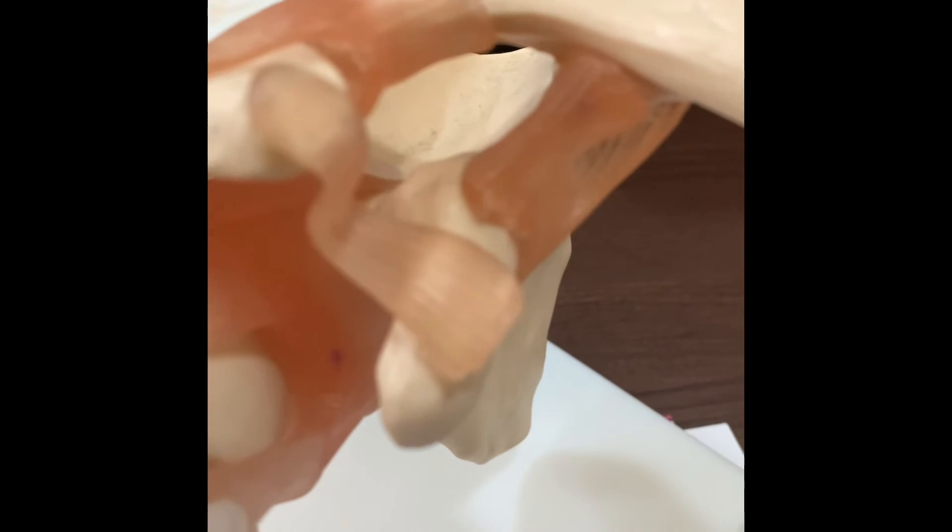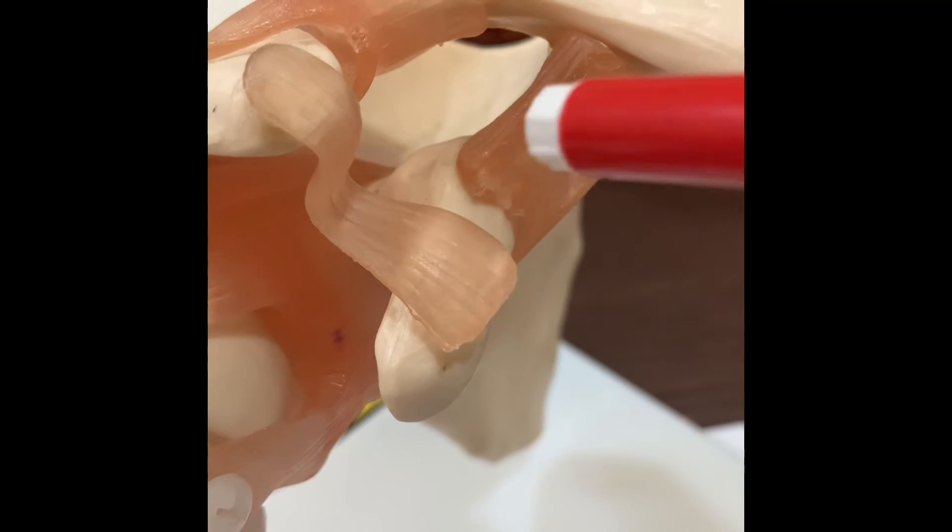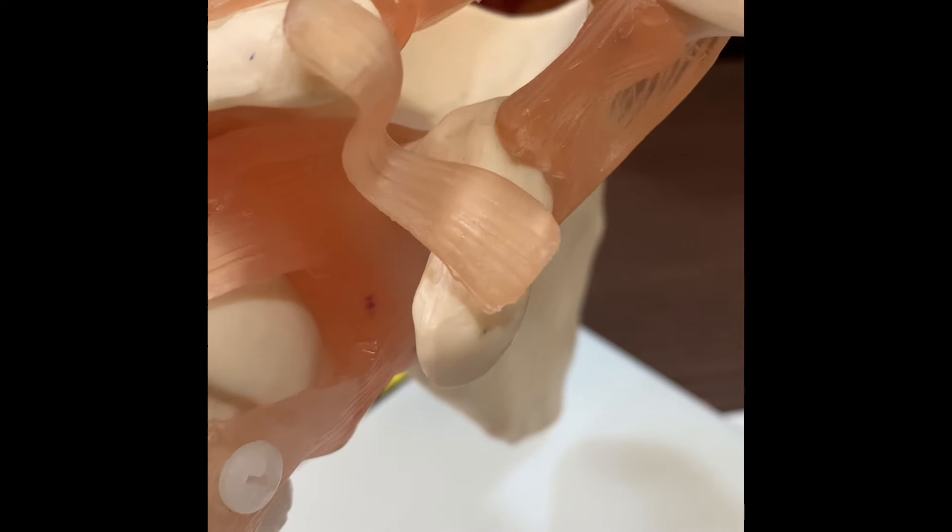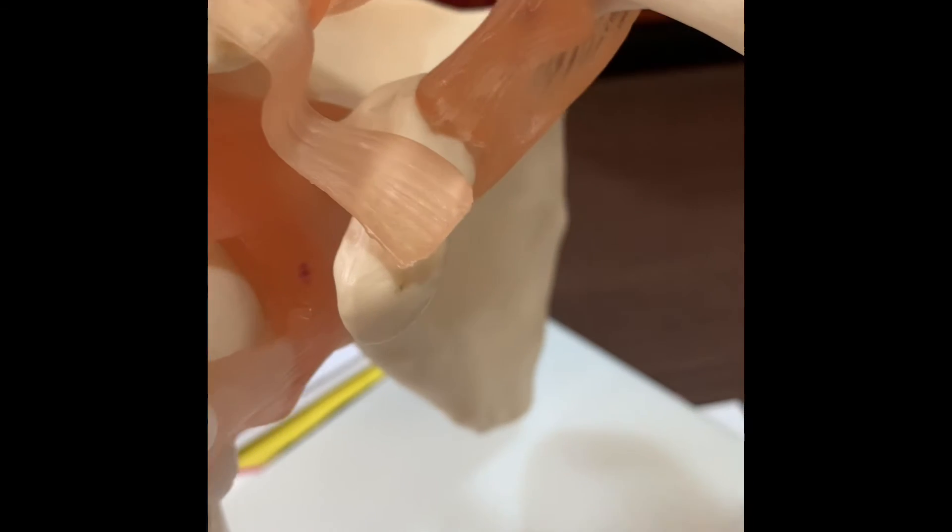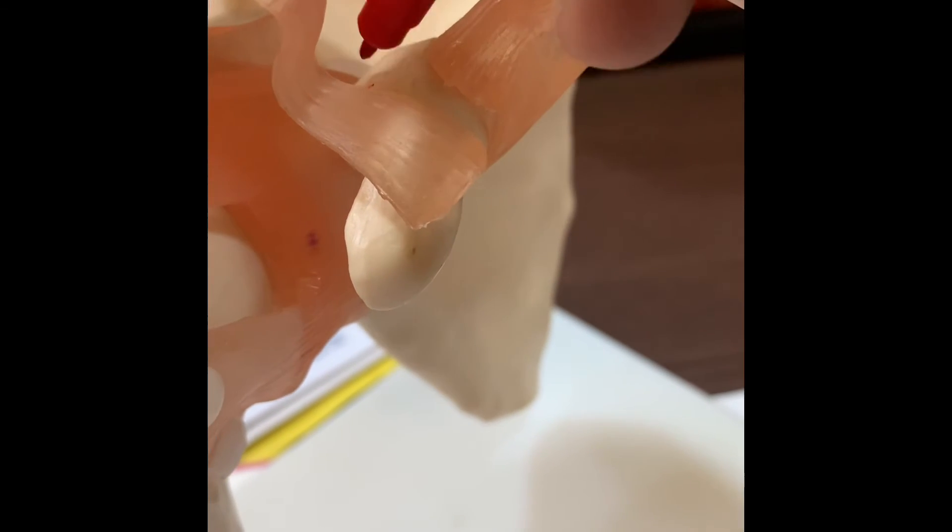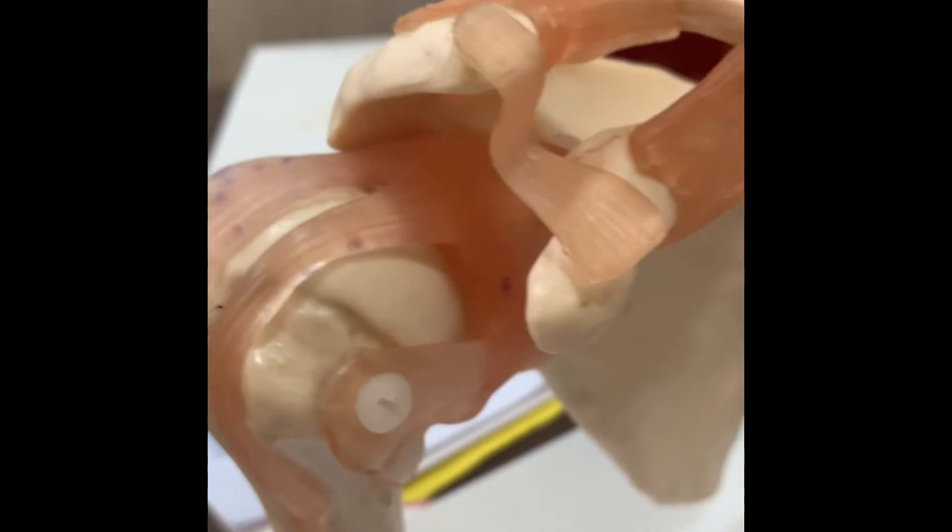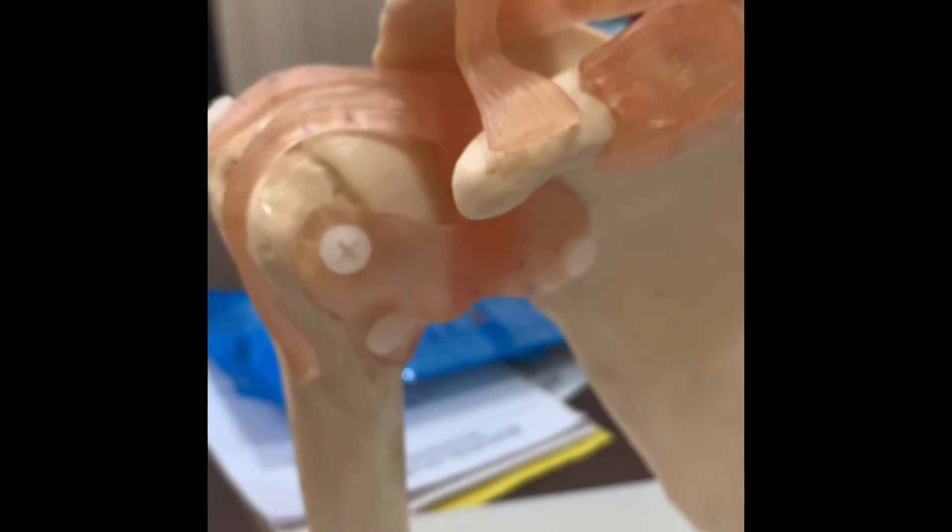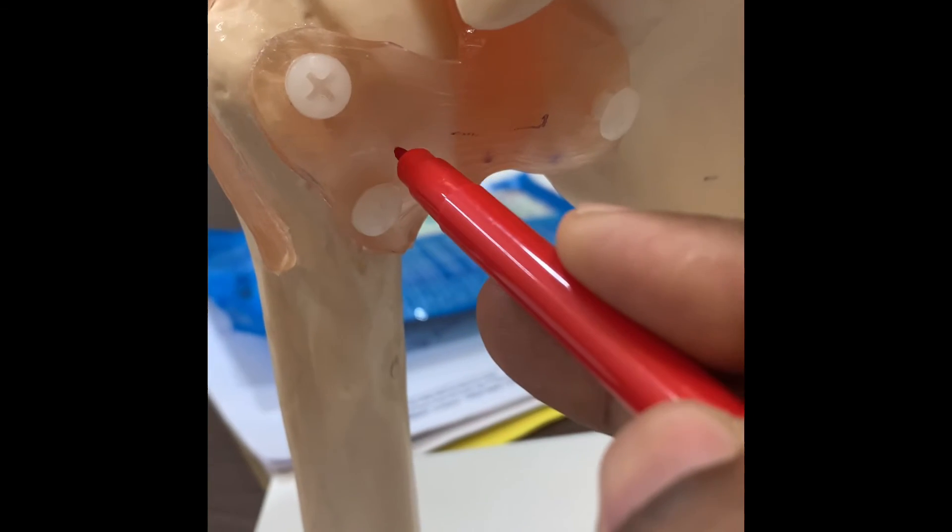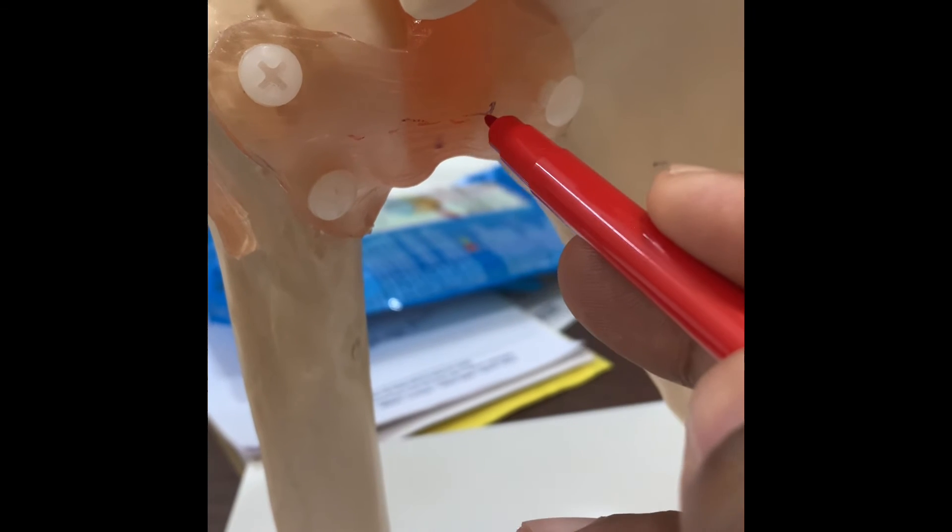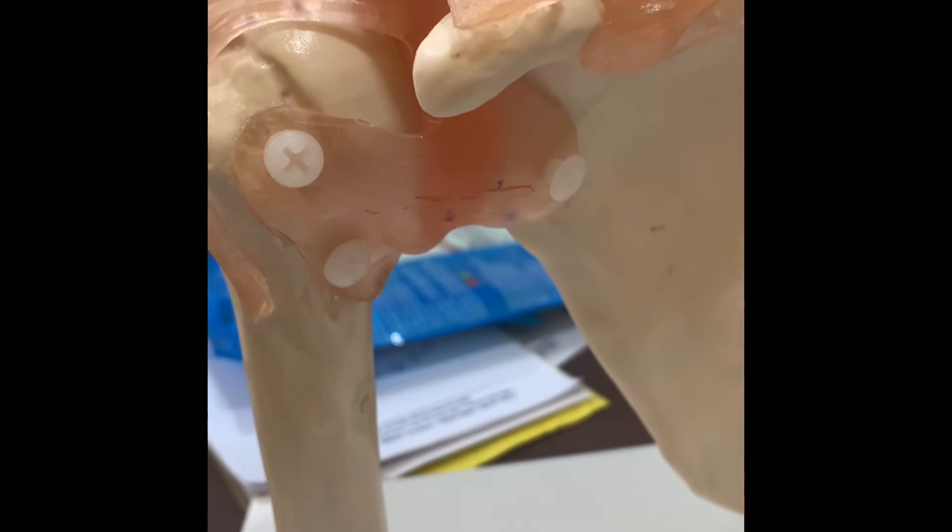The coracoid is cut near the base and placed in front of the socket. The marking shows where exactly I cut the coracoid. Then we make a split in the subscapularis muscle in the front to expose the socket.